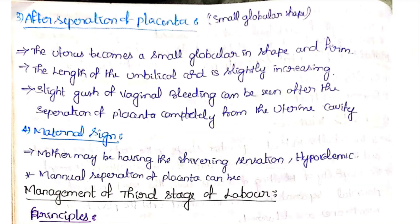After separation of the placenta, the uterus becomes a small globular shape. The length of the umbilical cord increases slightly. A slight gush of vaginal bleeding can be seen after the placenta separates completely from the uterine cavity.